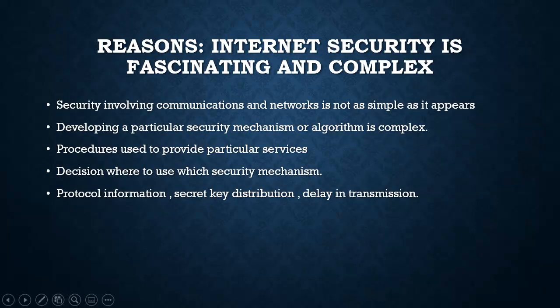Now, what are the reasons internet security is fascinating and complex? The first reason is that security involving communication and networks is not as simple as it appears. When doing communication or networking, we are connecting various hardware and software — we are using 5G, 4G — meaning the network itself is complex. So developing a particular security mechanism or algorithm is very complex when working with such networks. Additional challenges include which procedures to follow for a particular service, who decides where to use which security mechanism, protocol information, security key distribution, and delay in transmission. These are the reasons internet security is both fascinating and complex.